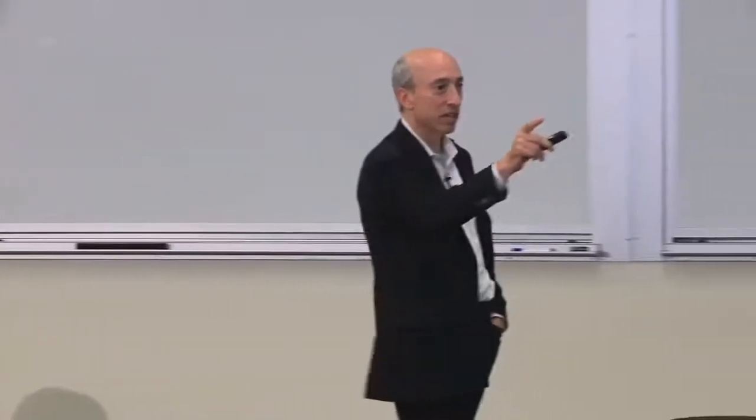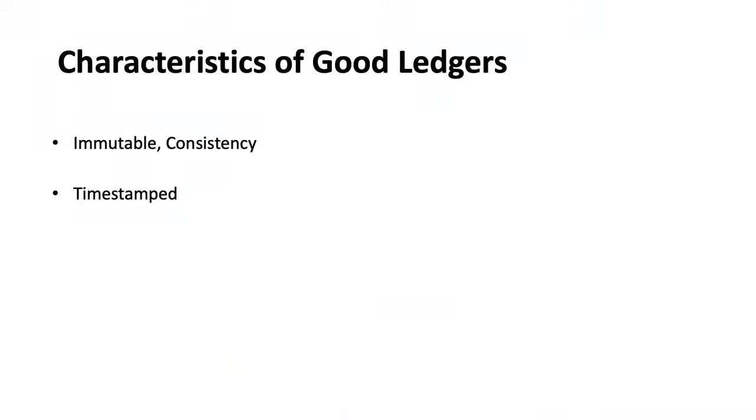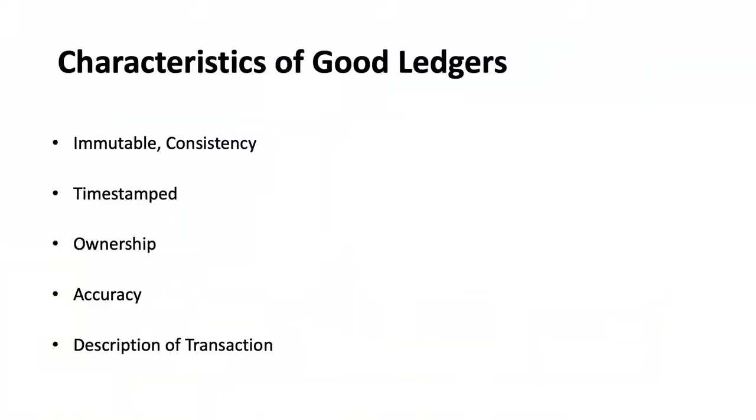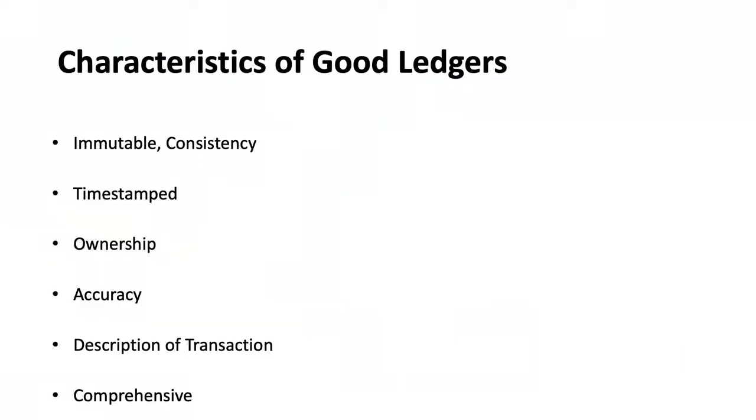More characteristics of a good ledger: accuracy, a description of the transaction, comprehensive. Someone suggests consistency, which is inside immutability — that it's valid, you can't change it, you can't counterfeit it. What you'll find is that the characteristics of a good ledger are in some part similar to the characteristics of good money — not identical, but they overlap a lot.